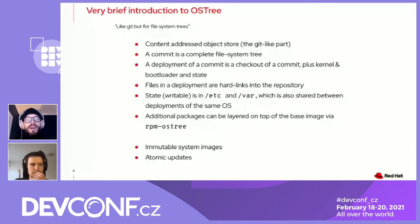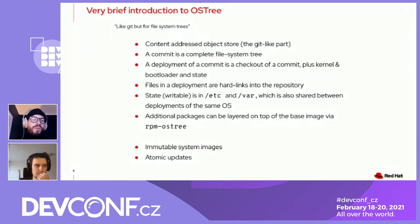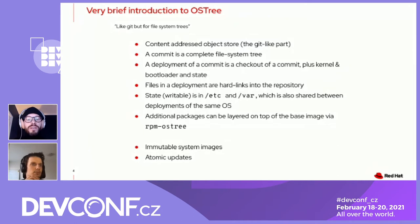A commit in such a repository is basically a complete file system tree. You get to a commit if you have a complete root file system tree, like your normal Fedora installation. Then you run the OSTree commit command on that tree, and it will put all the files, very much like a Git commit, into one atomic commit that belongs together. You can have multiple commits where the previous commit is referred to as a parent, very much like in Git.